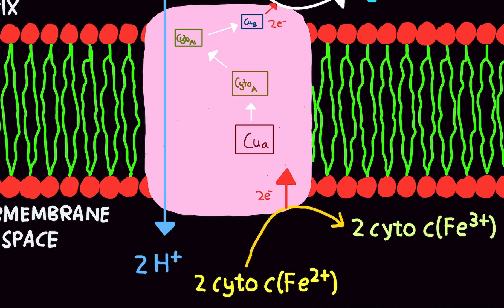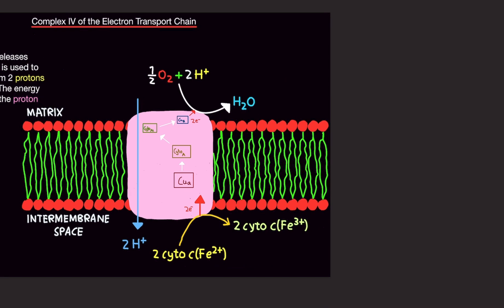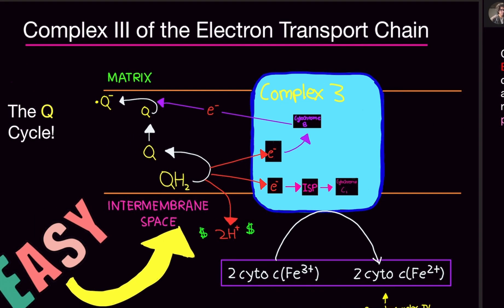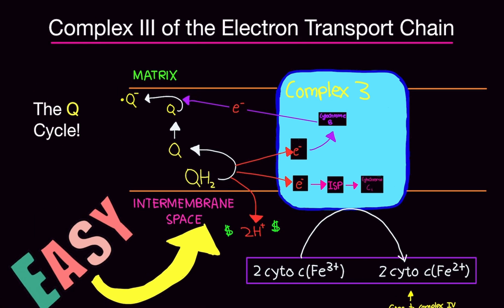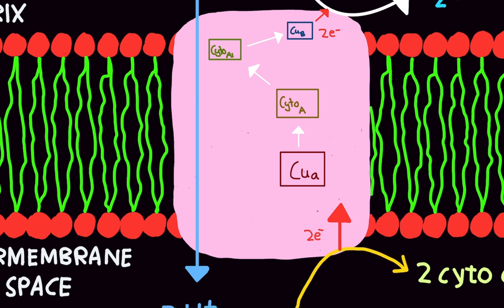So like I said, cytochrome C is basically going to drop off two electrons into this complex space. Now you're probably wondering, why is it two electrons? Because here I said it was one electron. Well, in the last video in Complex III, I mentioned there are two rounds of Complex III. There's round 1 and round 2. So each round produces an electron. So this is assuming both rounds are finished, and that is why we have two electrons here.